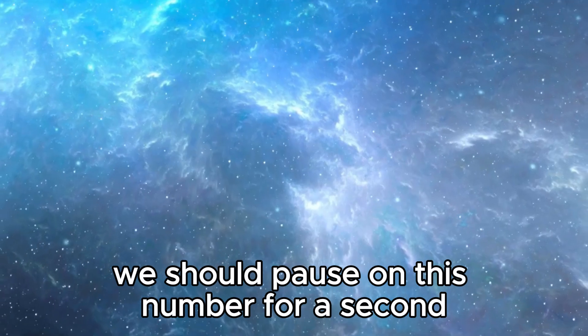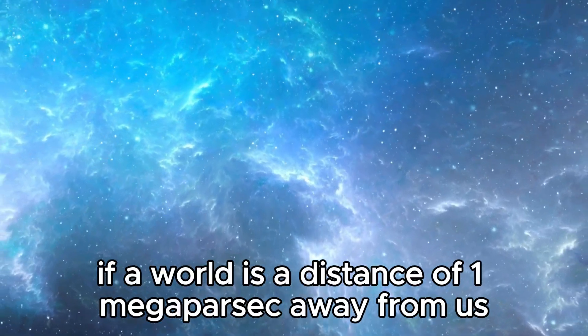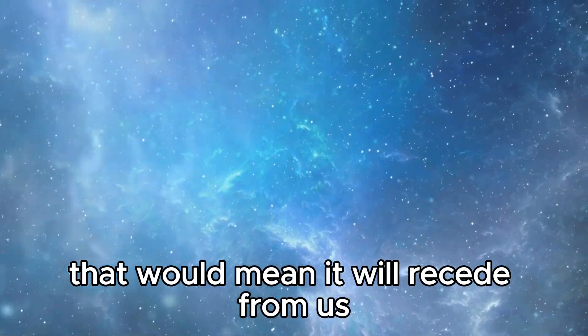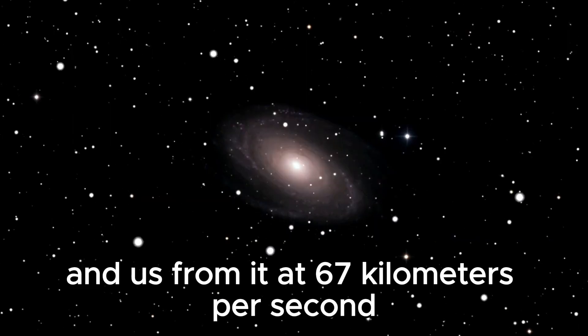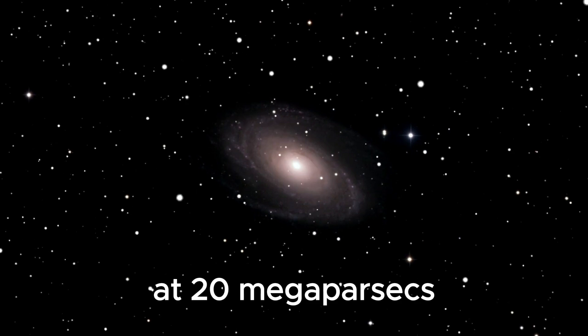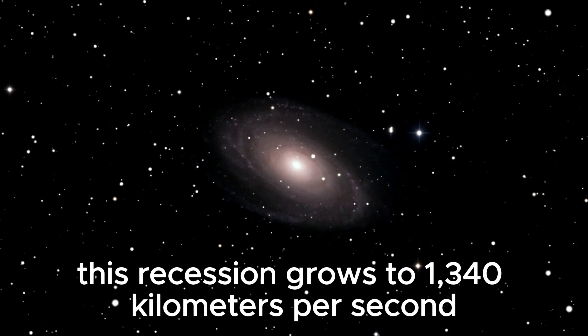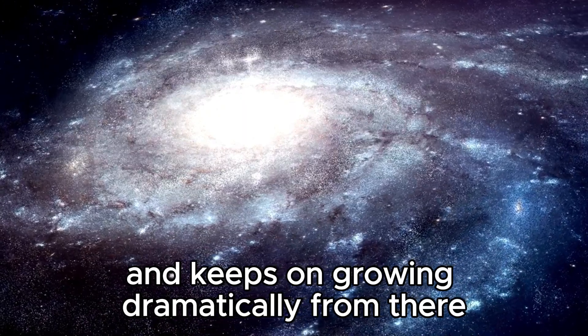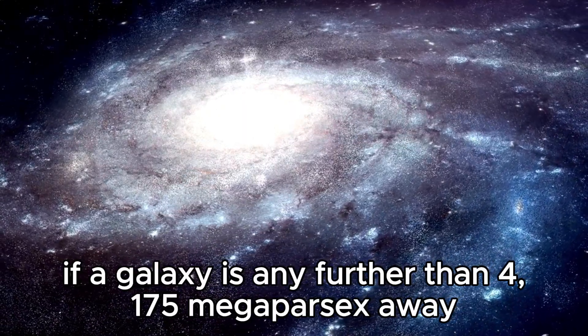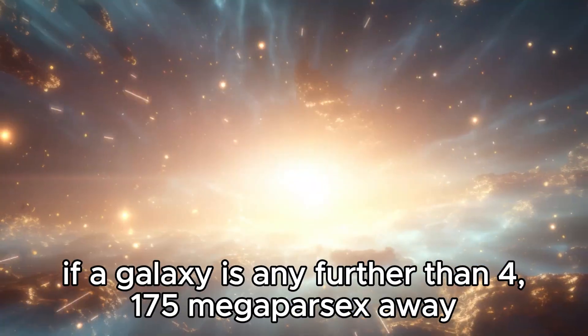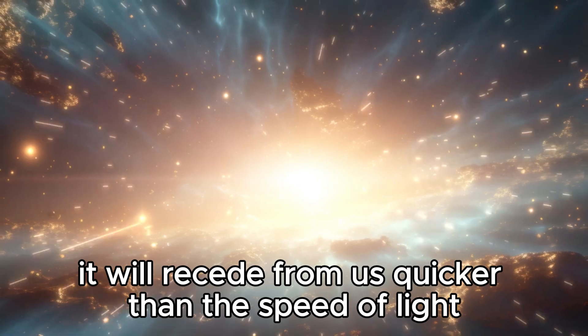We should pause on this number for a second. If a world is a distance of 1 megaparsec away from us, that would mean it will recede from us, and us from it, at 67 kilometers per second. At 20 megaparsecs, this recession grows to 1,340 kilometers per second and keeps on growing dramatically from there. If a galaxy is any further than 4,175 megaparsecs away, it will recede from us quicker than the speed of light.